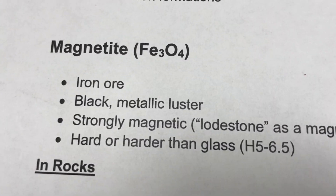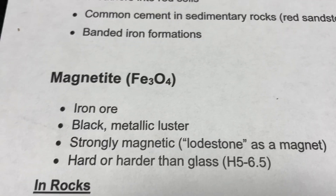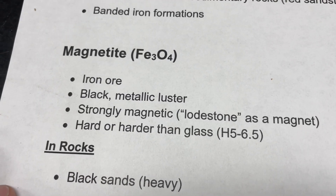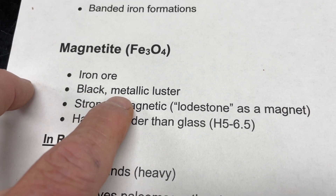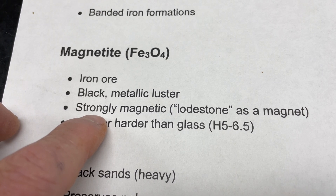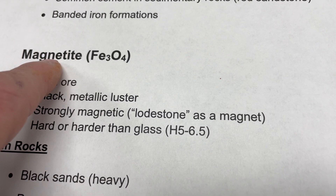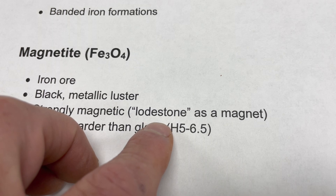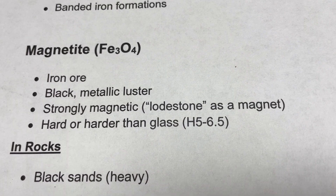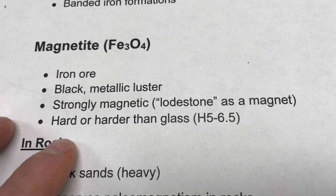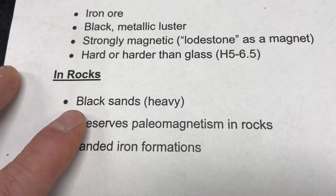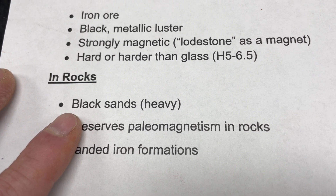Now we'll look at magnetite, which is also an iron oxide but a different form of iron with a different charge. This is an iron ore, just like hematite — both are mined for their iron content. Magnetite is usually black to dark gray; on a fresh surface it has a metallic luster, so it will look like metal. As the name implies, this is one of our strongest magnetic minerals — it will strongly attract a magnet. The mineral itself can sometimes be magnetized and is then called lodestone. It's also harder than glass.